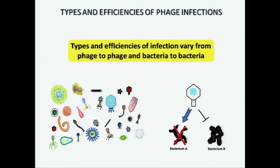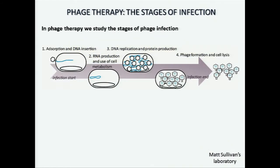Understanding the types and efficiencies of phage infection is very important, and they vary from phage to phage and bacteria to bacteria. So for every pathogen and every phage we have, we need to understand what is the type and efficiency of infection. That's what we do in Matt Sullivan's laboratory — we take a pathogen of interest, a phage that can infect it, and ask what are the types and efficiencies of phage infection. We do that by looking at all stages of infection with a variety of techniques and the help of collaborators.